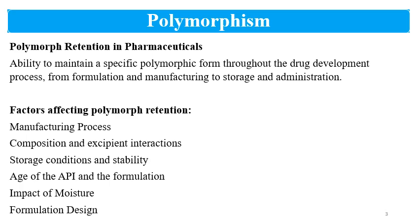Regarding excipient interactions: some APIs and excipients interact and can lead to a change in the polymorphic form, so polymorph stability and retention need to be tested. Storage and stability conditions — mainly temperature and humidity — and exposure to moisture can also impact polymorph retention and conversion. It is important to have long-term stability data and accelerated stability data to study changes in the polymorph of the drug substance.